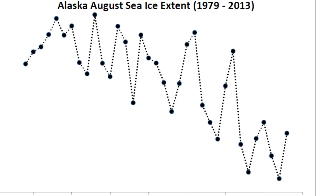Welcome back to remote sensing applications using ArcGIS. This is the third mini project candidate that you can choose from. In this mini project we'll look at the declining sea ice extent near Alaska over the past 35 years from 1979 to 2013. Your ultimate goal is to produce a plot showing the August sea ice extent near Alaska from 1979 to 2013, and you'll see that it declines and reaches its minimum in 2012.